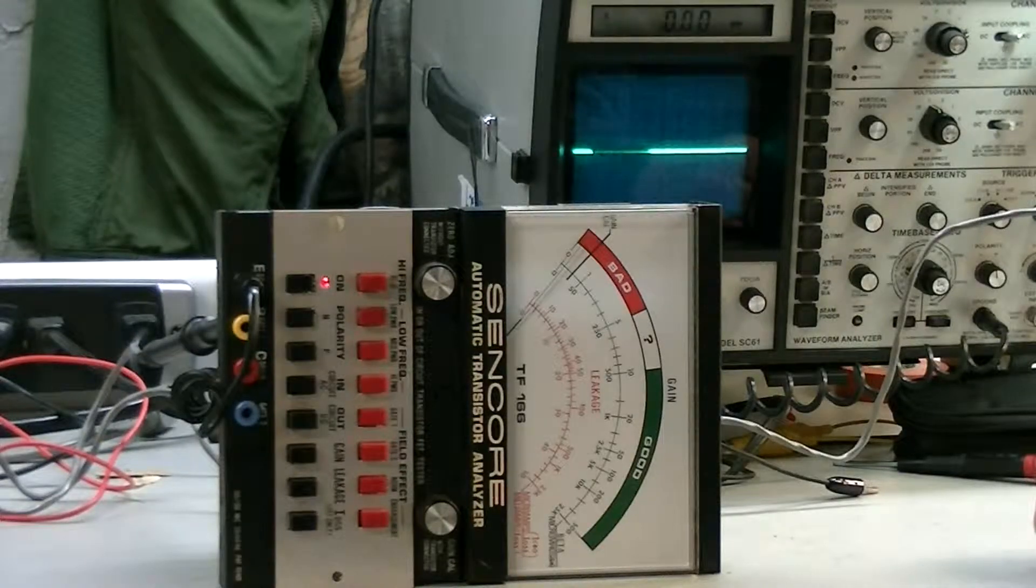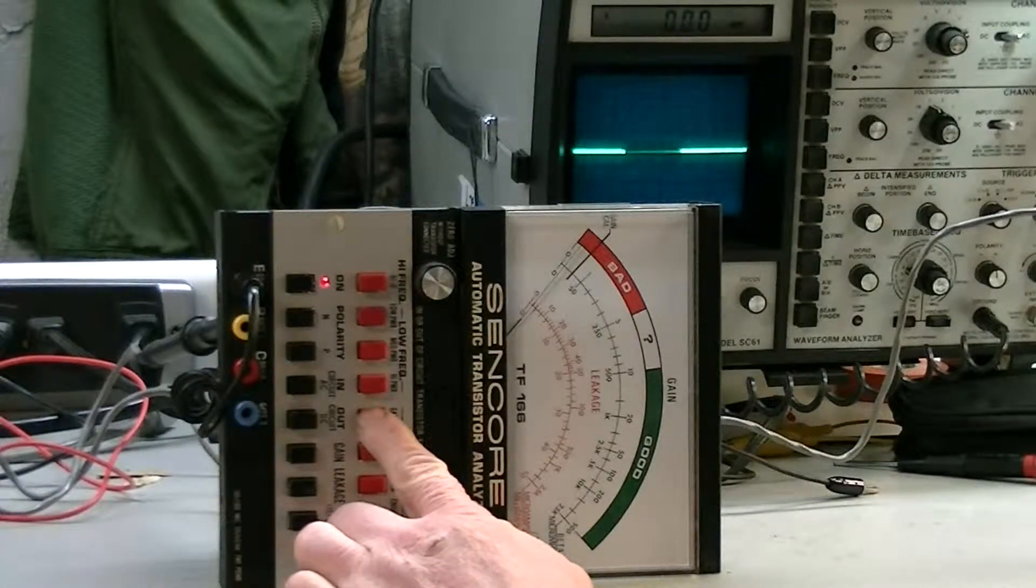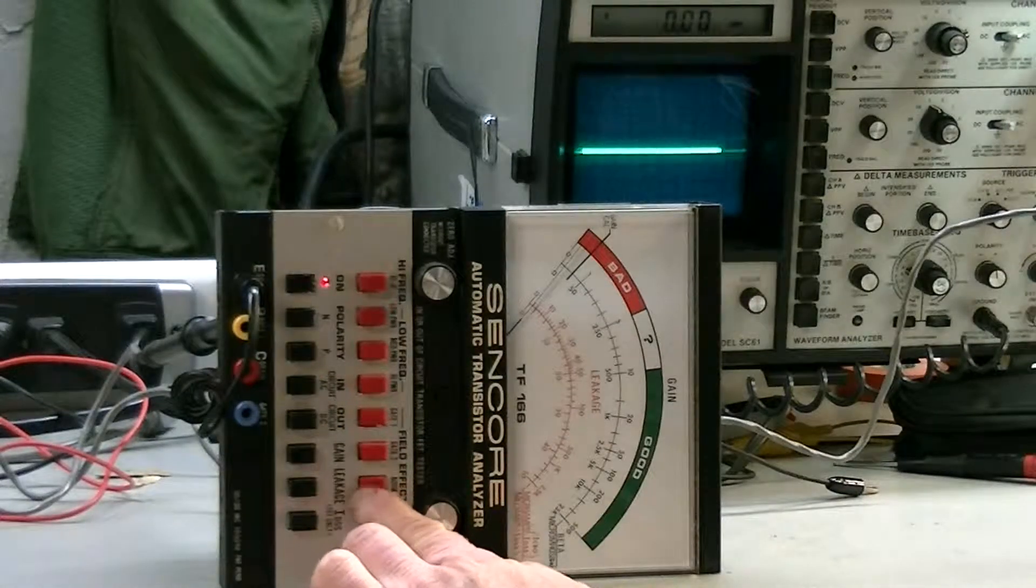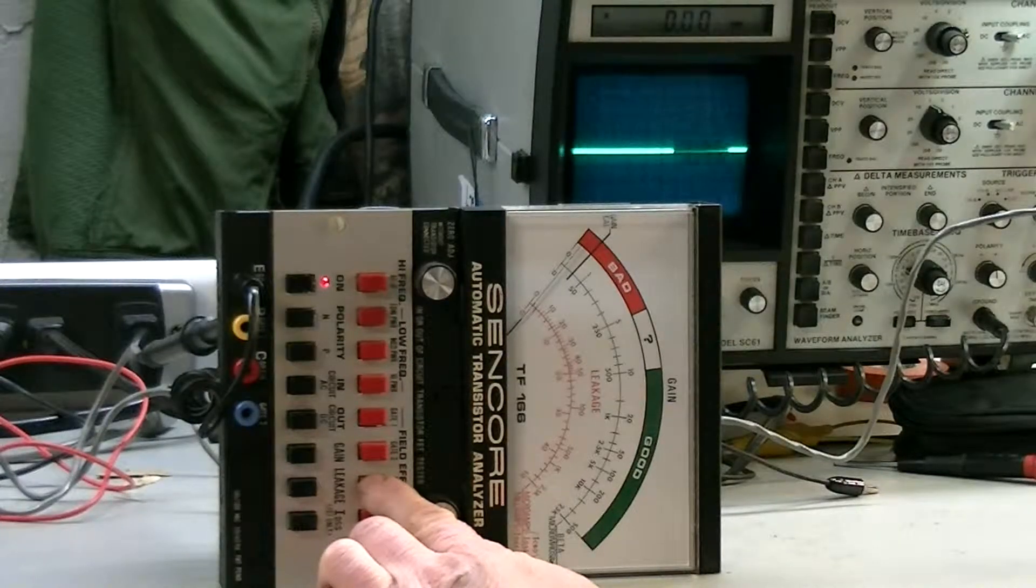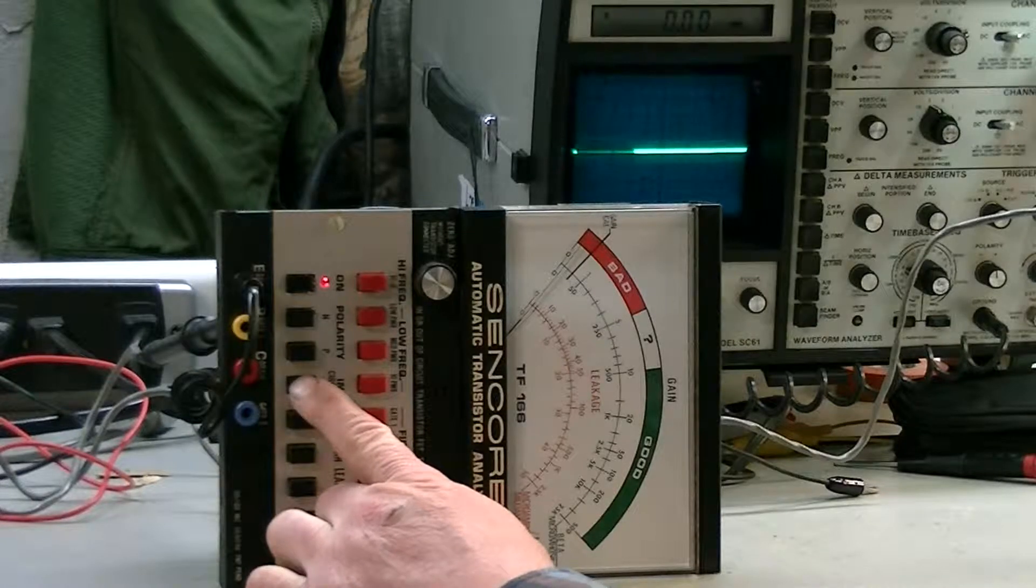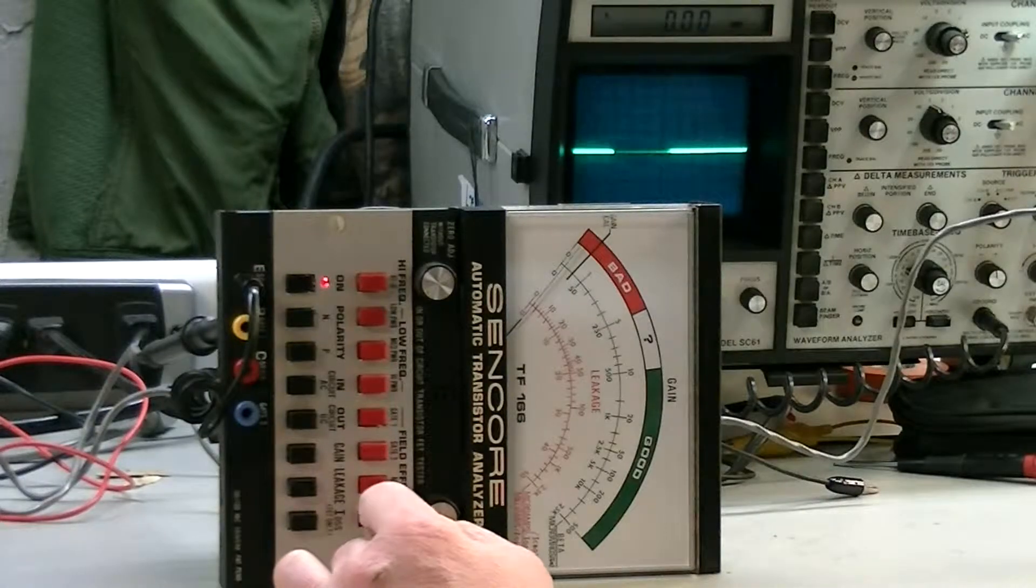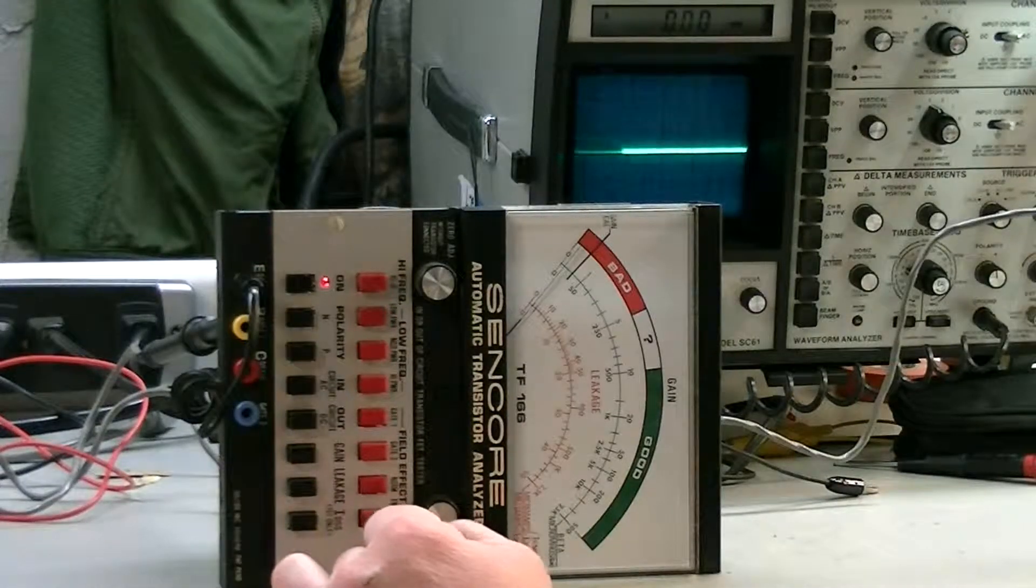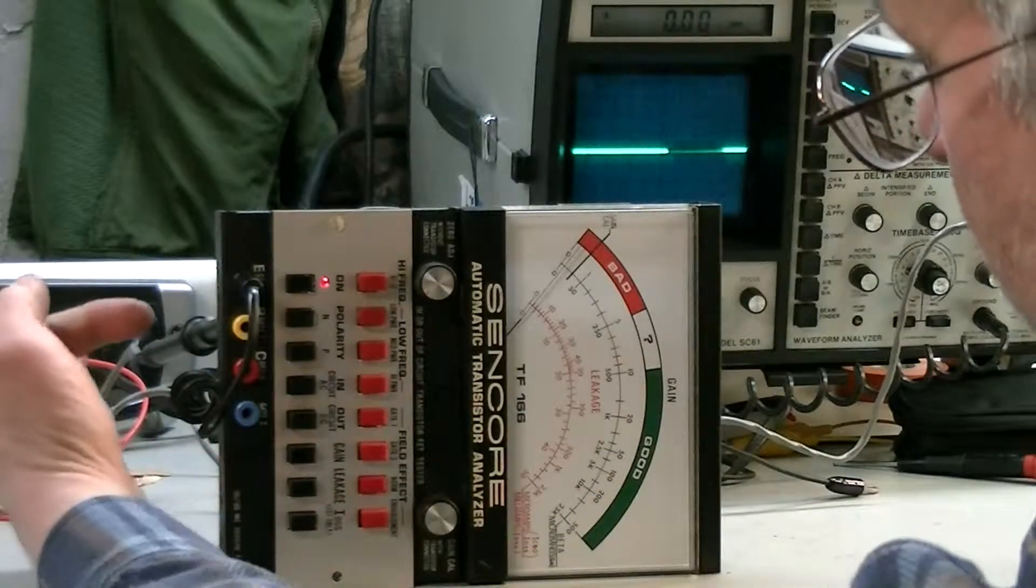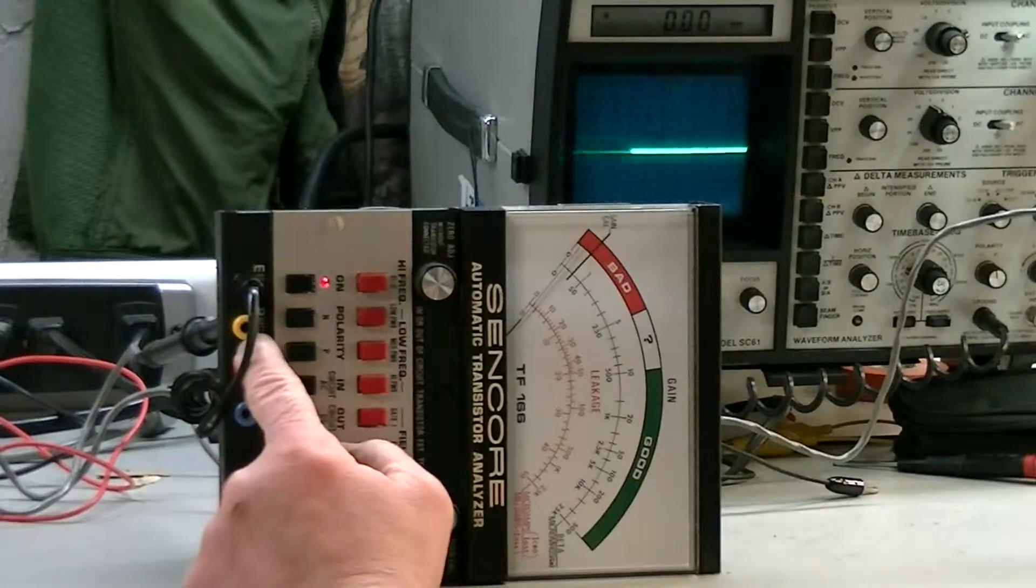But what you're supposed to do is you have gate one button in. Normal mode rather than enhancement mode field effect. Negative polarity. And then AC in circuit. And then you connect the oscilloscope ground lead to the source lead. And then back behind here I have the scope lead hooked up to gate one.